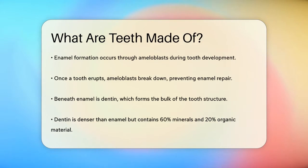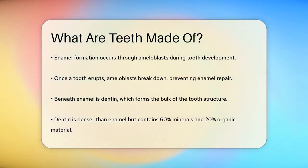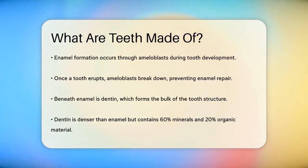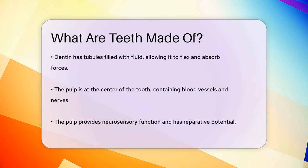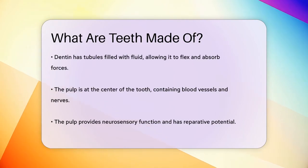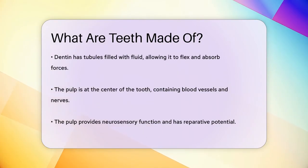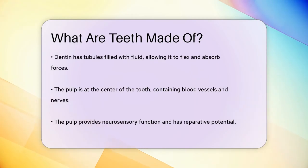Underneath the enamel lies the dentin, which makes up the bulk of the tooth's structure. Dentin is a hard and dense tissue, but it is softer than enamel, and contains about 60% mineral by weight and 20% organic component. It is composed of tubules filled with fluid, which allows it to flex and absorb forces, acting as a substructure for the enamel. Dentin is responsible for the natural color of teeth and can affect their overall appearance.